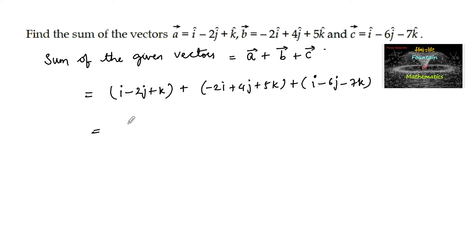So here we can write 1 plus minus 2 plus 1 times i, and the next one minus 2 plus 4 minus 6 of j cap, and the next one.